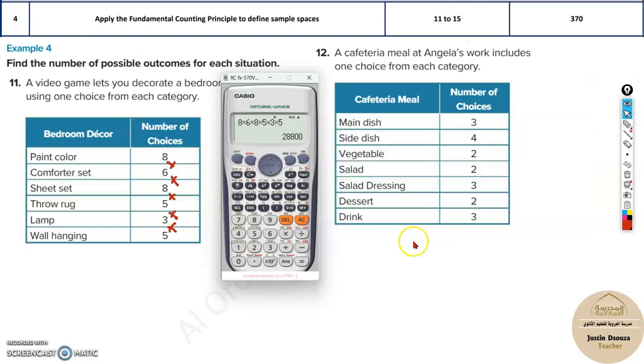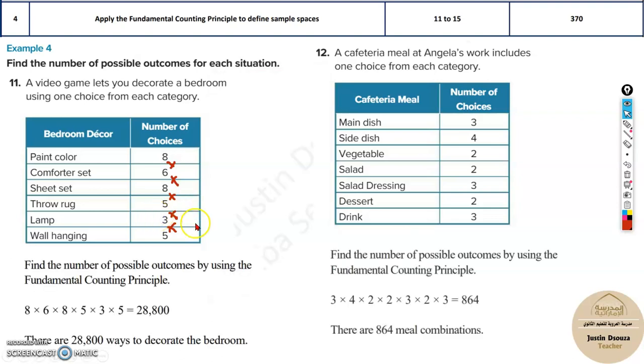Let's try that. Let's multiply all this over here. 6, 8, 6, 8, multiplied by 5, 3, 5. And the answer you get, 28,800 is the total possibilities. These many ways are there to decorate the bedroom over here.